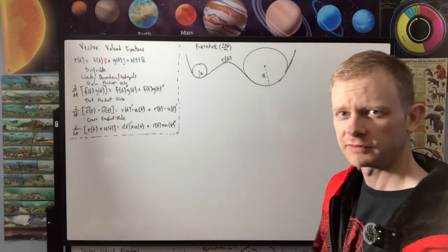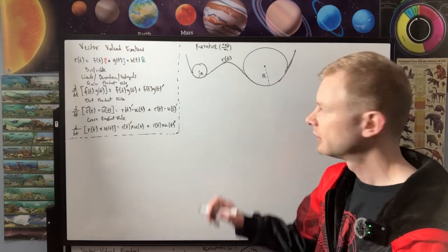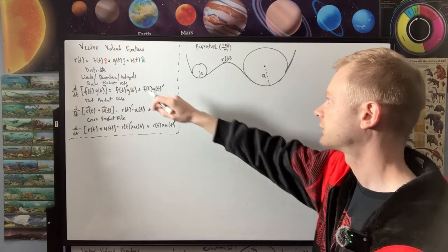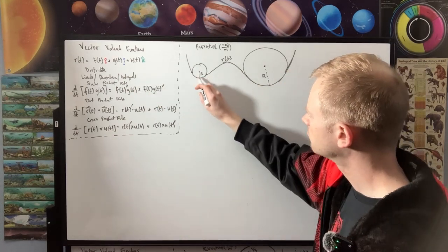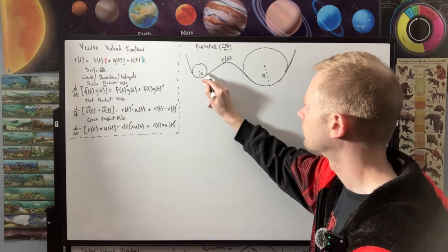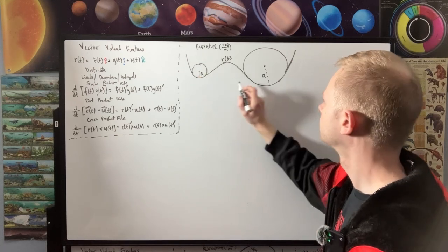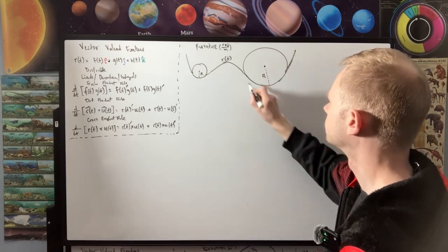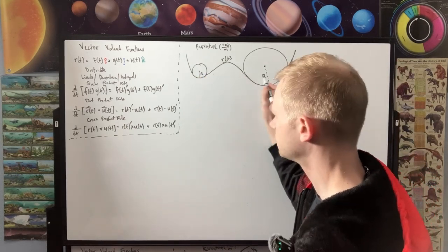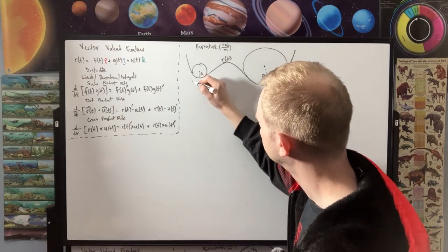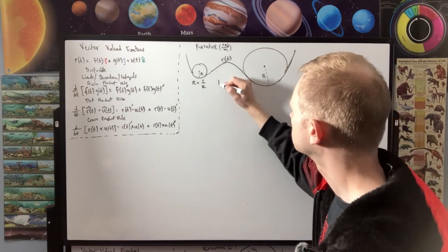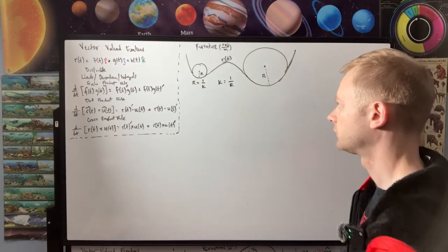The next concept is curvature. I have a diagram tracing out a line called R(t), our vector-valued function, with a small circle here trying to describe how this curve has a smaller radius compared to a much larger curve. The radius r = 1/k, where k is the curvature — so k = 1/r.